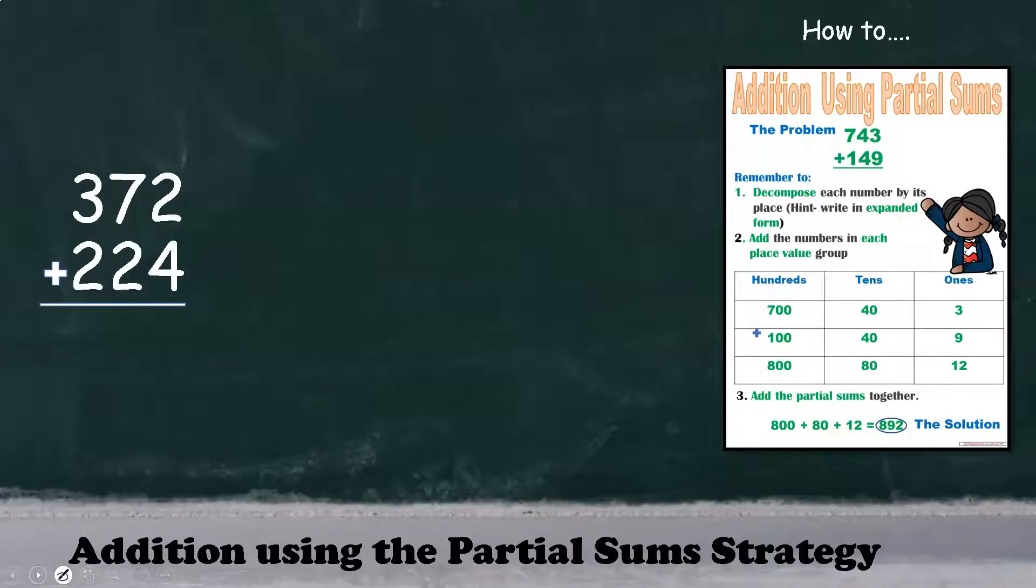In this example, we're going to add a three-digit number using the partial sum strategy. We're going to start by decomposing each number. 372, we have a three in the hundreds, seven tens, and two ones. 224, we have two hundreds, two tens, and four ones.